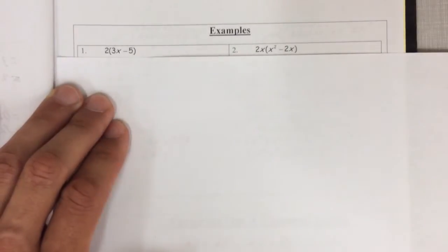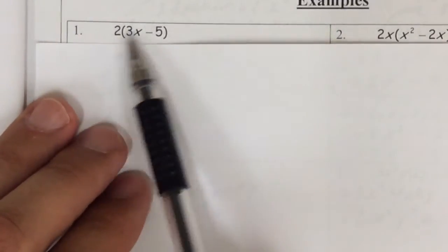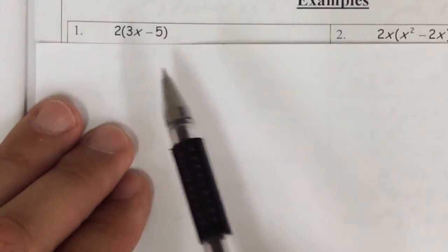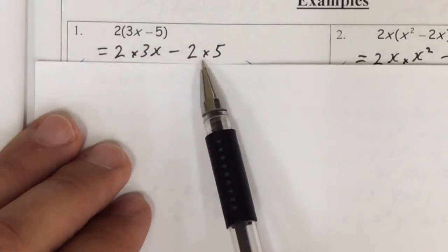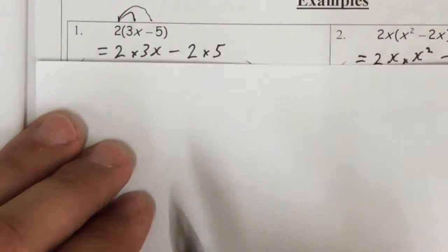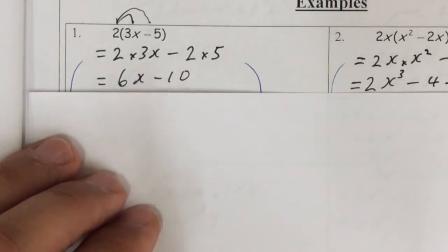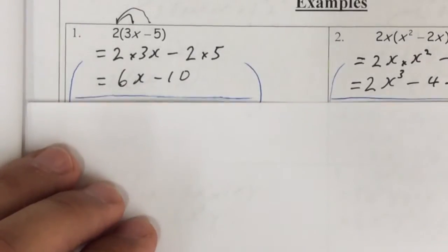What are we going to do here? We're going to multiply the 2 times the 3x and the 2 times the 5, and subtract. So 2 times 3x, 2 times 5 — you distribute it in and keep that minus sign in there. That gives you 2 times 3x is 6x, 2 times 5 is 10. So 6x minus 10.